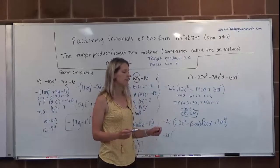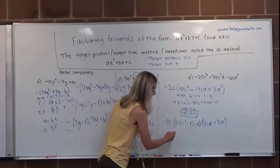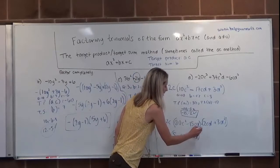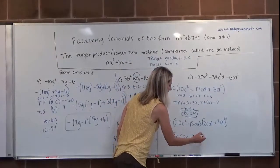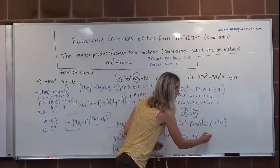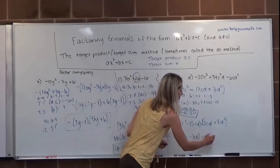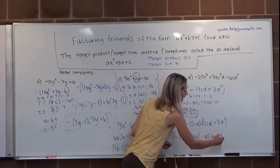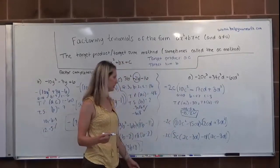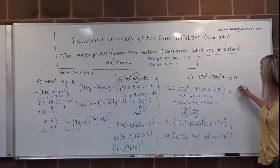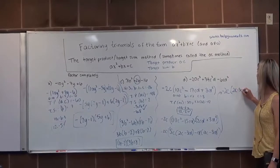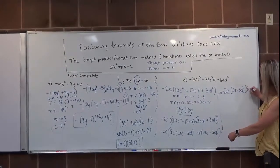In the first grouping, 10c squared and negative 15cd have a common factor of 5c, giving 5c(2c minus 3d). In the second grouping, because the first term is negative, we factor out negative d, giving negative d(2c minus 3d). Both terms share the common factor (2c minus 3d). Pulling it out gives (2c minus 3d)(5c minus d). Combined with the original GCF, the final complete factored form is negative 2c times (2c minus 3d) times (5c minus d).